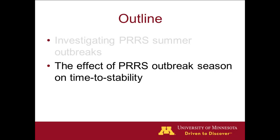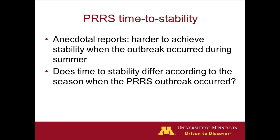Now I want to move to the second study conducted using the MSHMP data. Here we look at the effect that the season of the first outbreak has on time to stability — the time to winning negative PCRs. We also heard anecdotal reports that it is harder to achieve stability when the outbreak occurred during summer, and we wanted to know whether stability really differed across seasons.